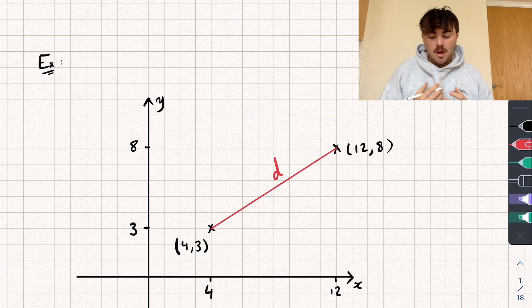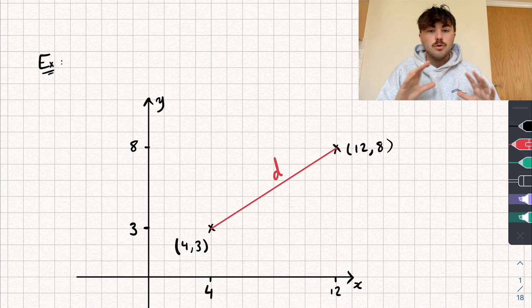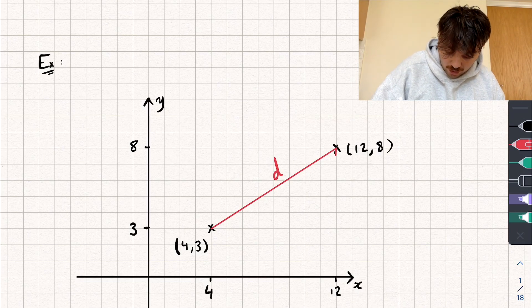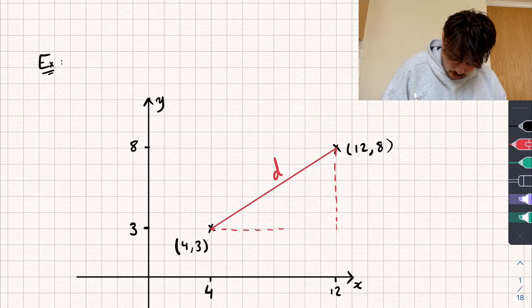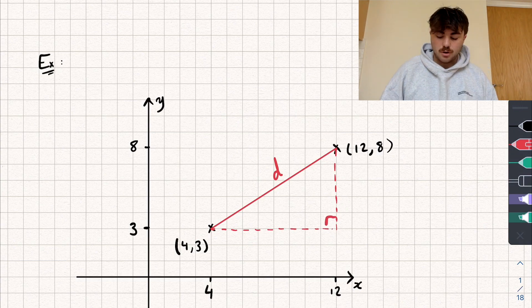So how do we do it? It's actually really easy and there's no new maths involved. In fact, we're just going to use Pythagoras. The first thing I'm going to do is construct a right-angled triangle by drawing a line going straight down like this and another one that goes across like this. And you can see here this is my right-angled triangle.